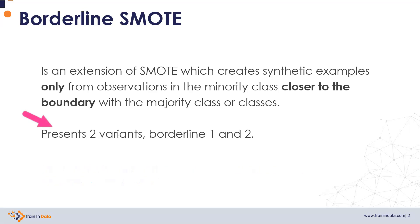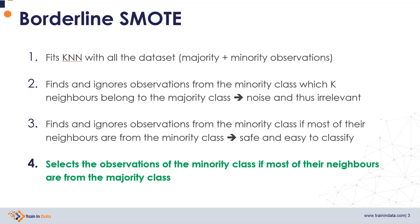Borderline SMOTE presents two variations to create synthetic data, which we will discuss in the following slides. We can summarize how Borderline SMOTE works in the following steps. First, it trains a k-nearest-neighbor algorithm utilizing the entire dataset — that is, the dataset containing both the majority and the minority observations.